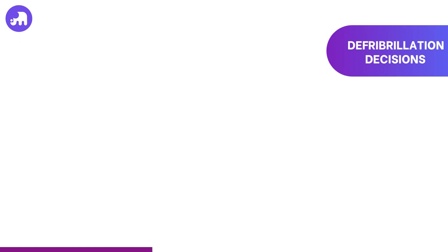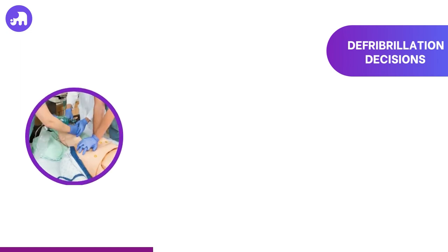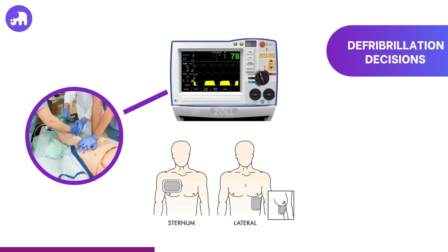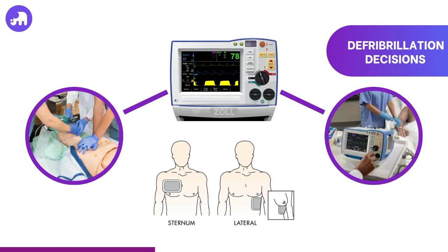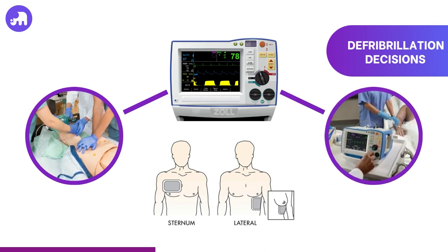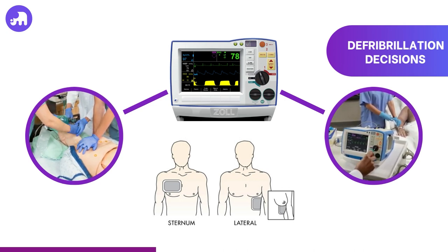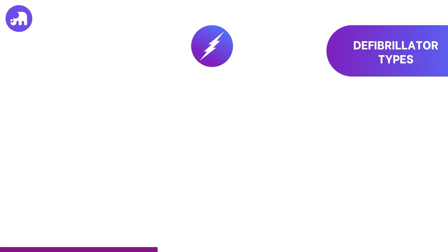When faced with a cardiac emergency, one of the foremost steps is to promptly begin CPR, especially if accessing the defibrillator might entail a delay. Once accessible, the defibrillator or monitor should be attached to the patient, allowing for a determination of the cardiac rhythm and subsequently deciding on the necessity for defibrillation. According to the guidelines, the prime consideration in any shockable cardiac rhythm is defibrillation, irrespective of the employed method.